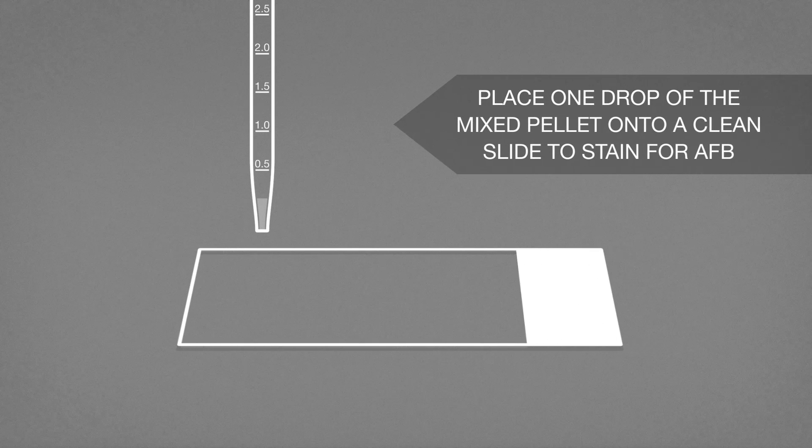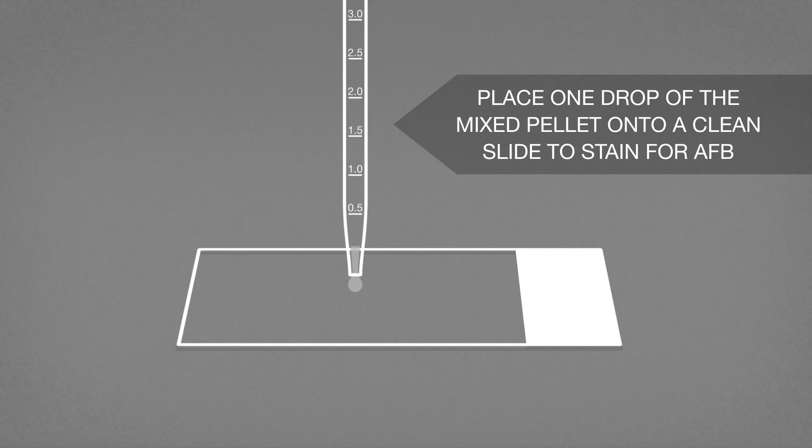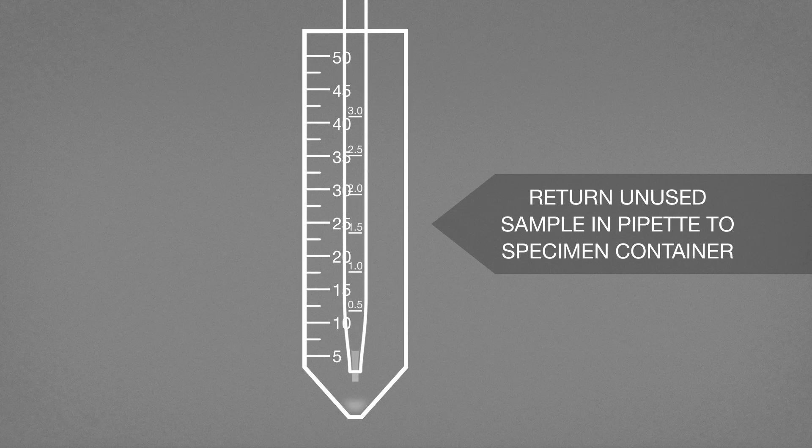Place one drop of the mixed pellet from the pipette onto a clean microscope slide to stain for acid-fast bacilli. Do not touch the slide with the pipette. Return the unused sample remaining in the pipette to the specimen container.